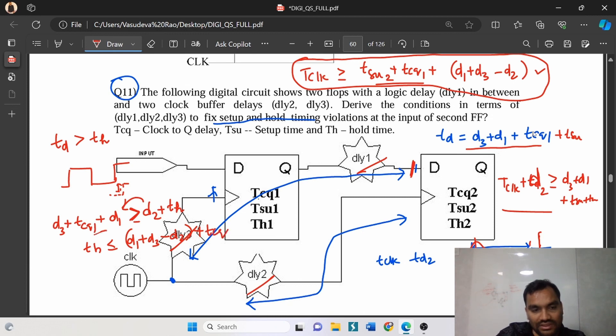Plus Tclock-to-Q. This will be your hold equation. You will put the numbers if they ask, and then you will simply solve.